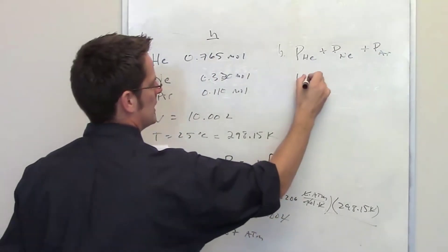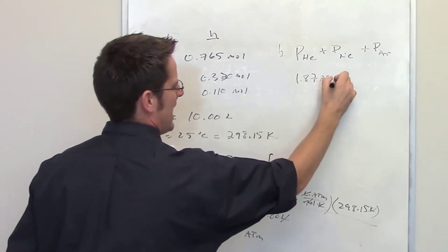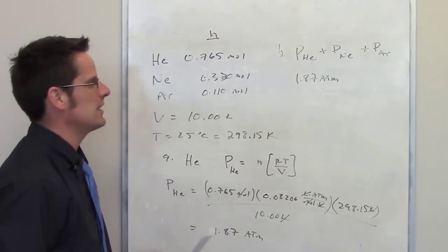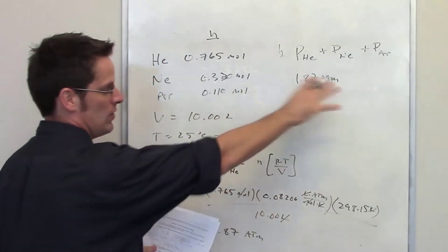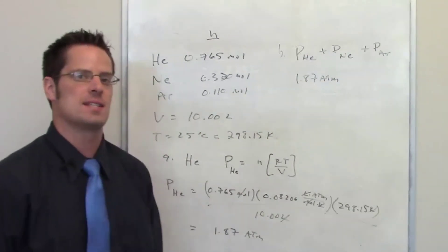We just calculated that the individual pressure of helium is 1.87 atmospheres. Once you guys calculate the individual pressures of neon and argon, you can just add all of those together, and that will give you the total pressure in the system.